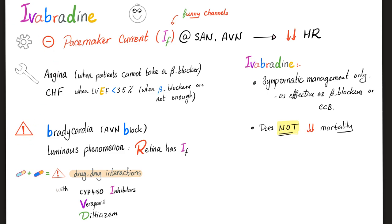What are the side effects of ivabradine? Bradycardia — because when you slow down the heart, this is called bradycardia. Also, AV node block, because the problem here is in the AV node. When you slow down the AV node, you will get an AV nodal block — hashtag heart block.